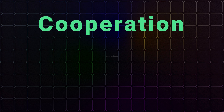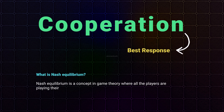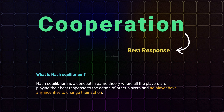From this explanation, cooperation looks like the best response for all, and could be the Nash Equilibrium. Nash Equilibrium is a concept in game theory where all players are playing their best response to the actions of other players, and no player has any incentive to change their action. Best response is the action that gives maximum payoff.